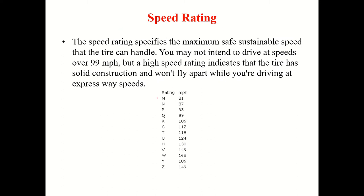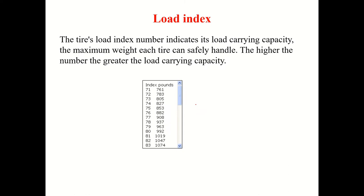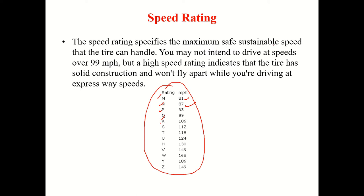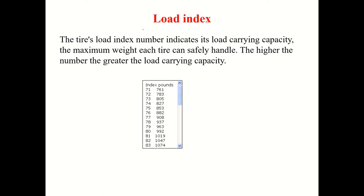Speed rating uses symbols M, N, P, Q, R and specifies the maximum safe sustainable speed in miles per hour that the tire can handle. You may not intend to drive above 99 mph, but a high speed rating indicates that the tire has solid construction and won't fail at express speeds. The load index number indicates the load carrying capacity — the maximum weight each tire can safely handle; the higher the number, the greater the load carrying capacity.